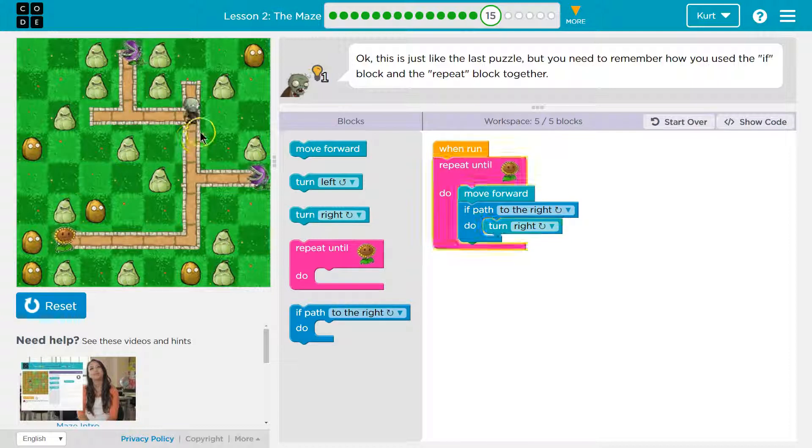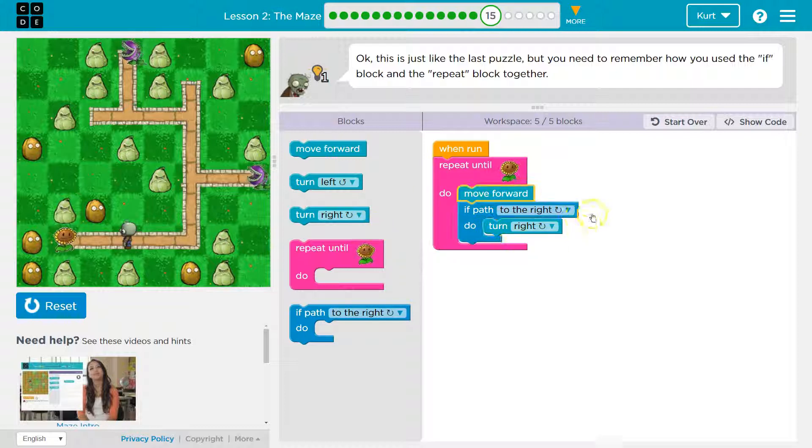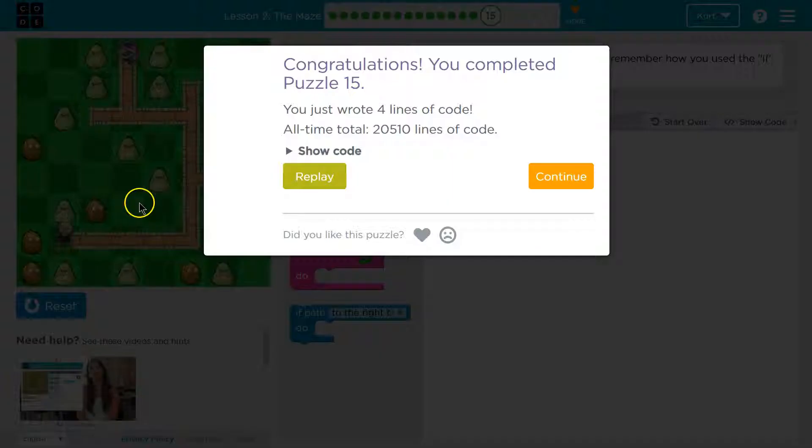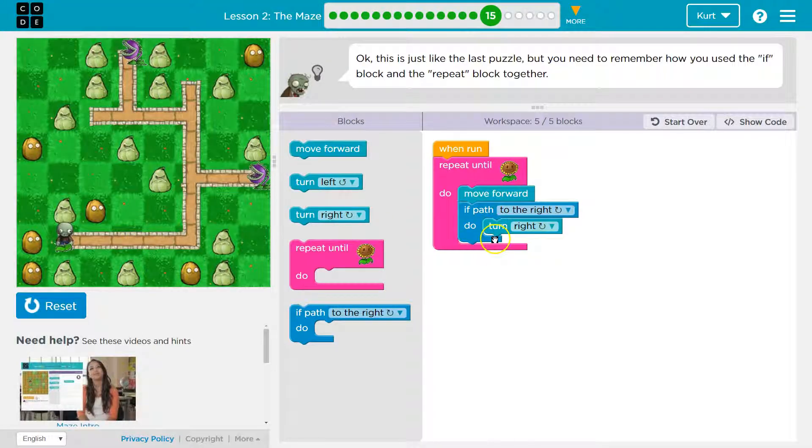And so you can see I'm checking, oh, yep, there's a right, and I turned right. And then, oh, yeah, there's a right, and I turned right. And notice all the other times I don't ever turn into this wall, I don't turn into the wall, because if there is no right, when I check, when it goes out, if there's no right, I don't turn.